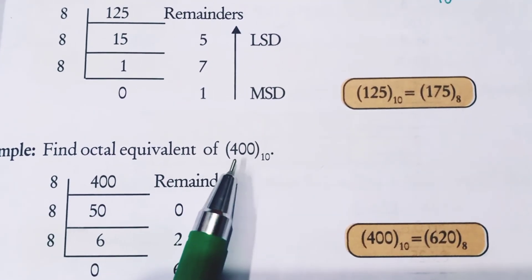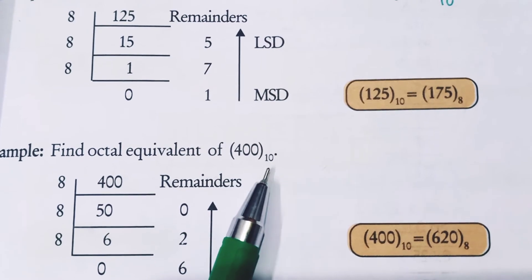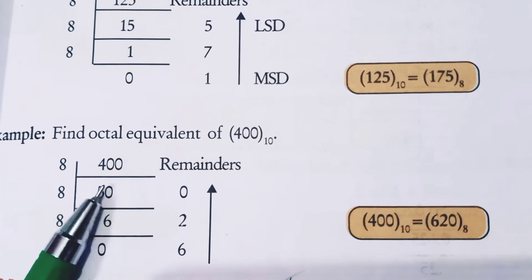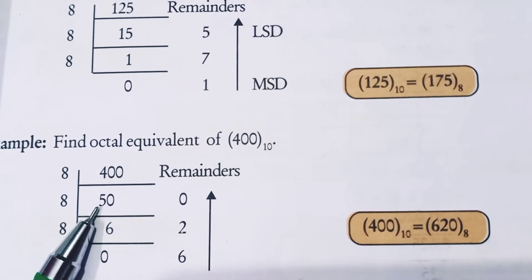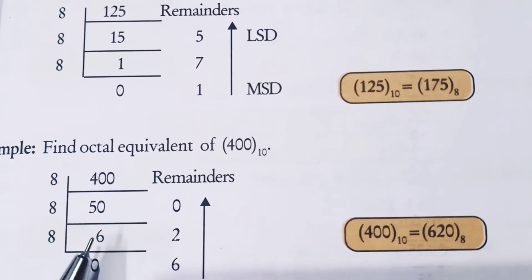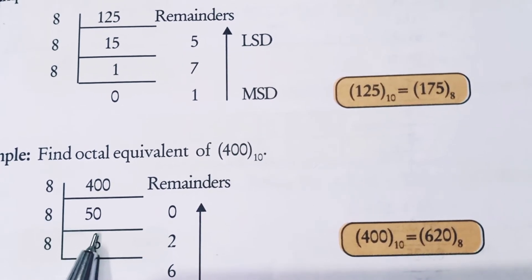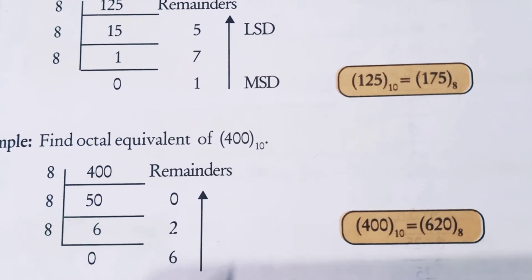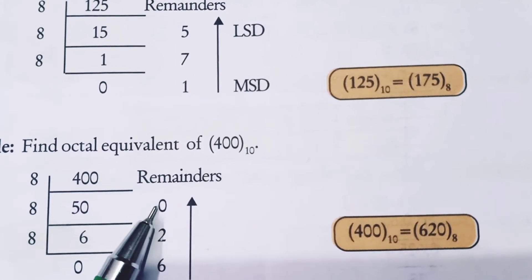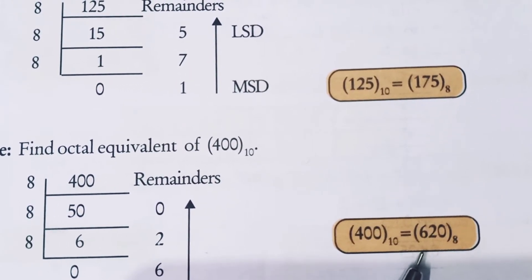Next: find the octal equivalent of 400 base 10. 400 divided by 8 gives 50 with remainder 0. Then 50 divided by 8 gives 6 with remainder 2. Then 6 divided by 8 gives 0 with remainder 6. Reading bottom to top, MSD is 6 and LSD is 0. The answer is 400 base 10 equals 620 base 8.